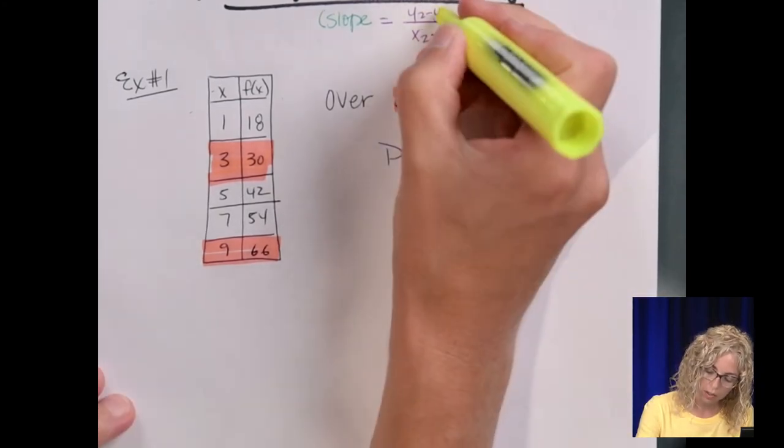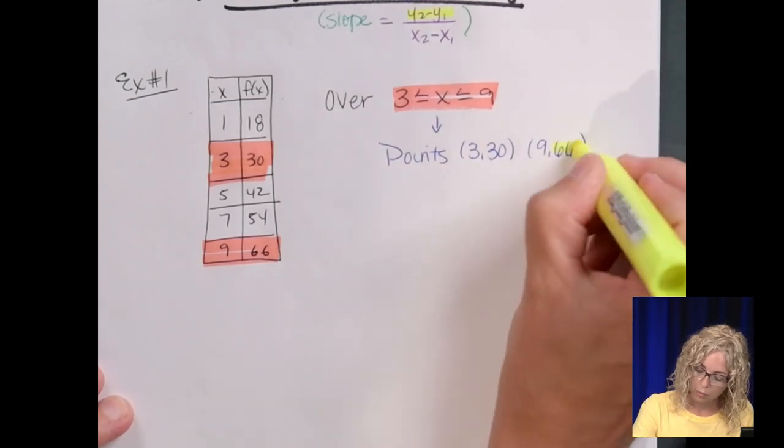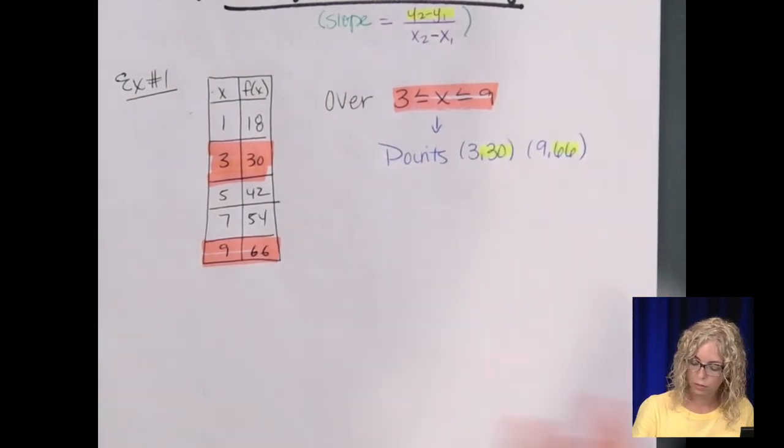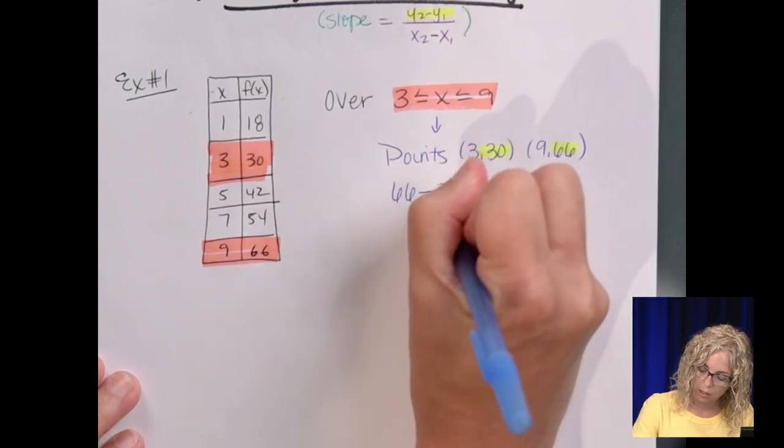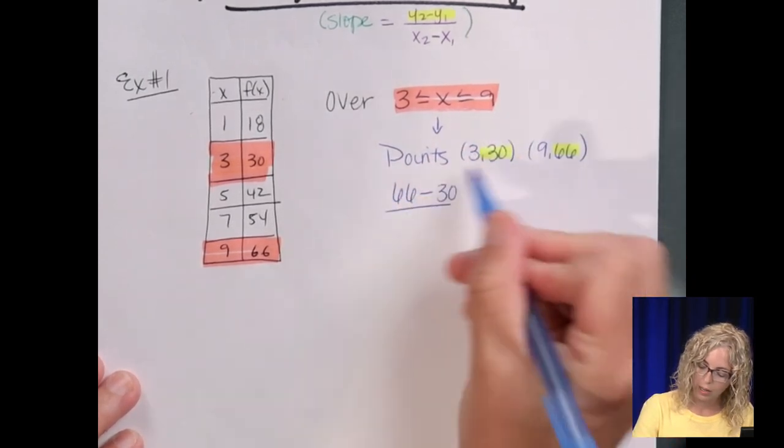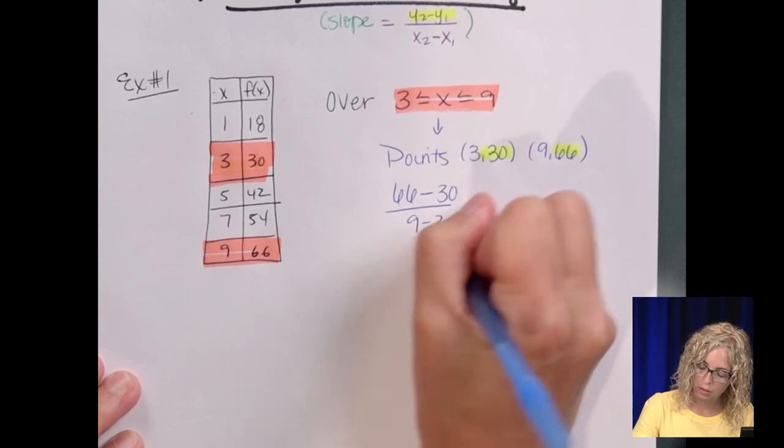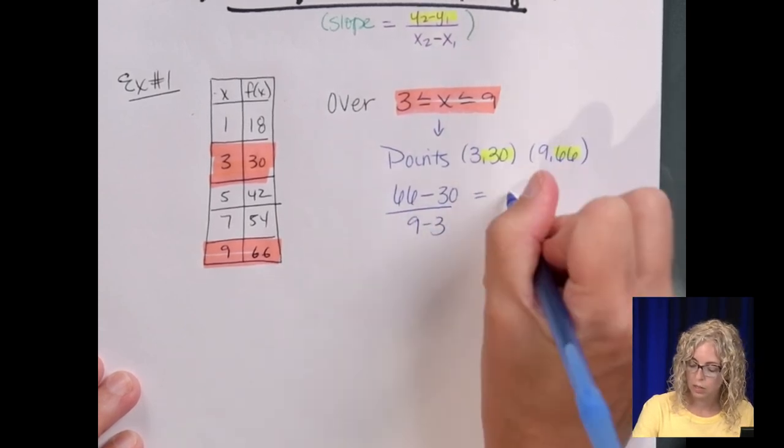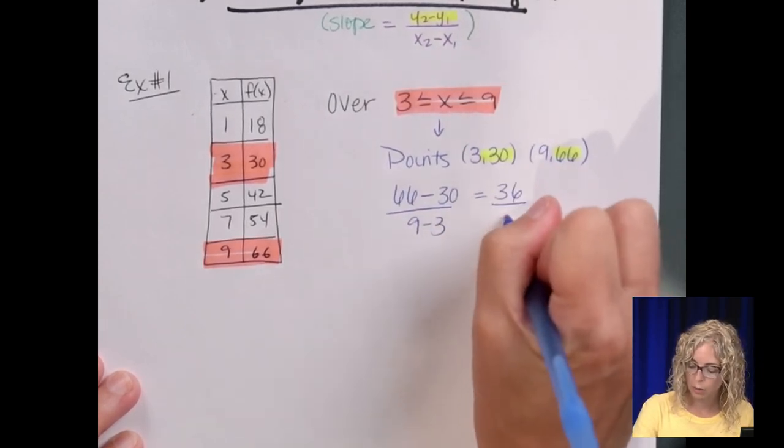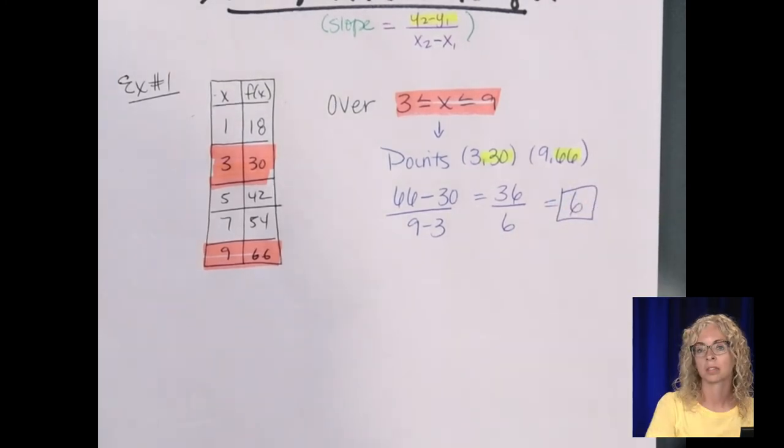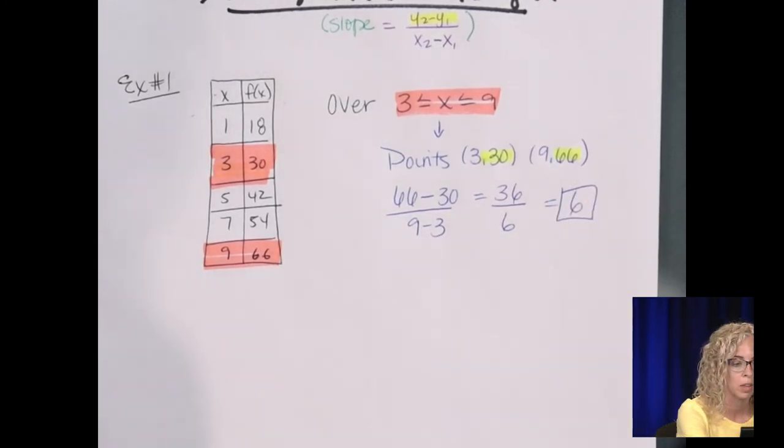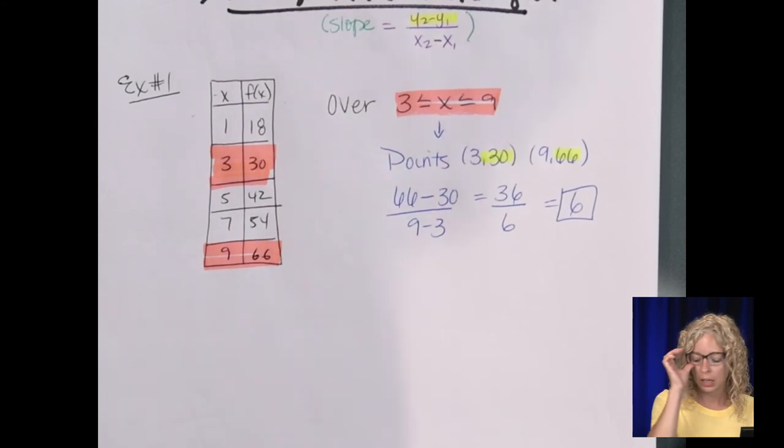So we take our y's, so that's up top, we have to subtract them, 2nd minus 1st. So we do 66 minus 30, divide that by 9 minus 3. So 66 minus 30 is 36, divided by 6, so our rate of change is 6.